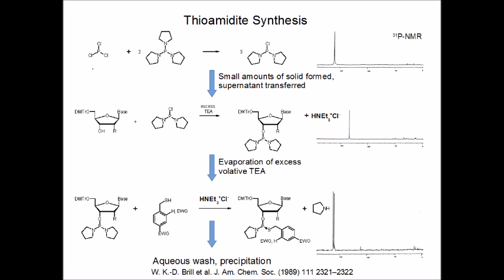These ammonium halides catalyze the substitution of one of the pyrrolidinyl groups on the bispyrrolidinyl amidite by the thiol, giving the thioamidite. As shown in the NMR spectrum on the lower right of this slide, the phosphorothioamidite is obtained in a pure form and can be easily used for oligonucleotide synthesis after aqueous workup and precipitation.